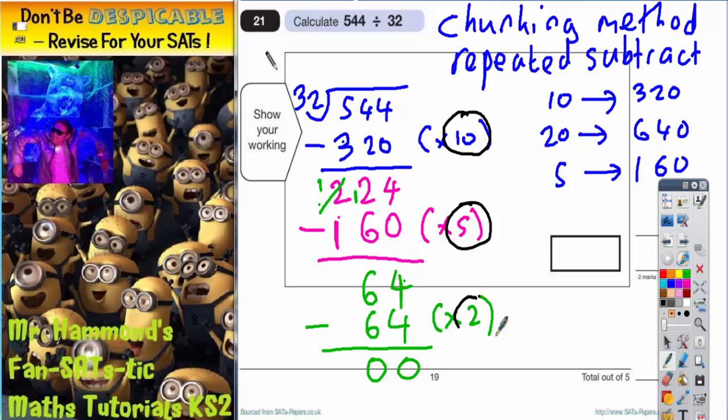So how many is that all together? 10 plus 5 plus 2 is 17. So we've done 17 chunks of 32. Therefore, there must be 17 32s in 544, and so it's 17 that goes in the answer box. 17.